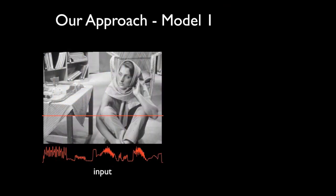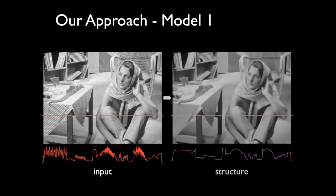We demonstrate our approach on a natural image containing various textured regions with different characteristics. During the smoothing process, the structures are accurately preserved, while the texture or small-scale details are mostly removed.